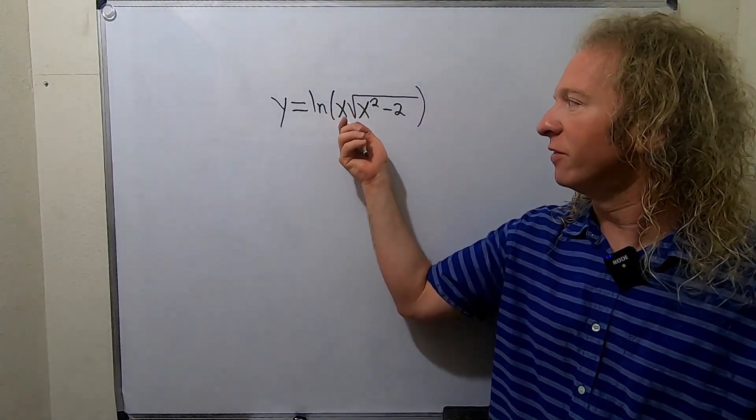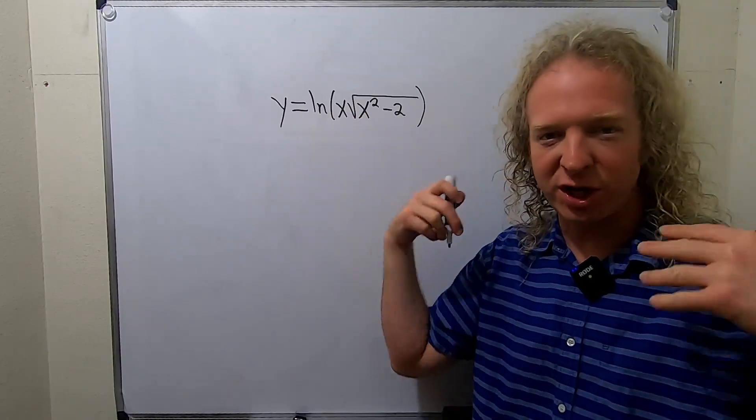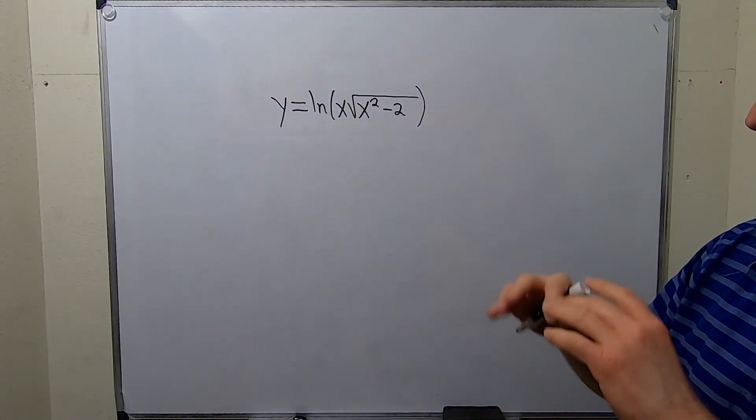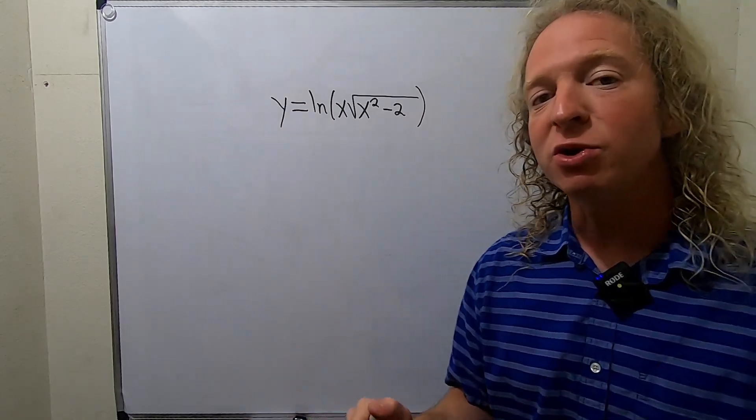However, this is a really messy derivative. It's going to be a product rule and a chain rule as well. So it's a good idea to rewrite things first. We can use the properties of logs.